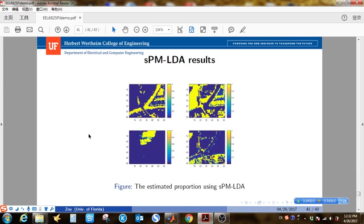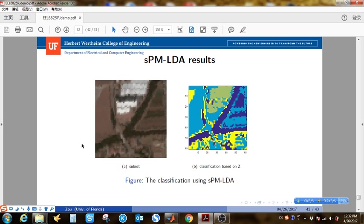Also, the estimated proportion maps are smoother and more separable than PM-LDA. See, they have very high proportion values for each class, for each end-member. The classification is similar to PM-LDA since there is a lack of ground truth. So there is no way to quantitatively evaluate the classification.